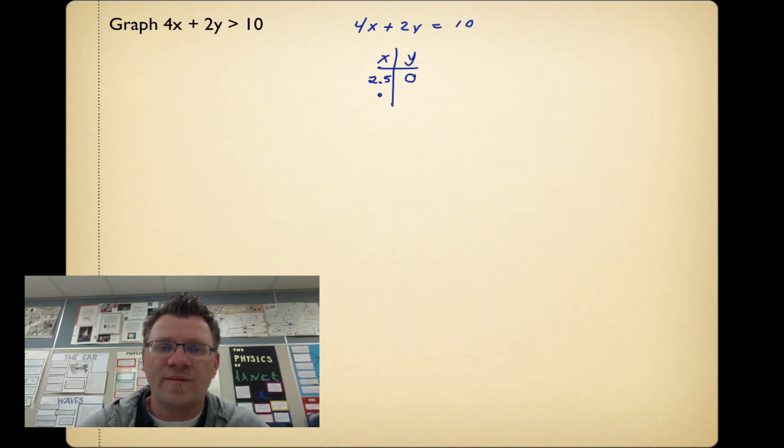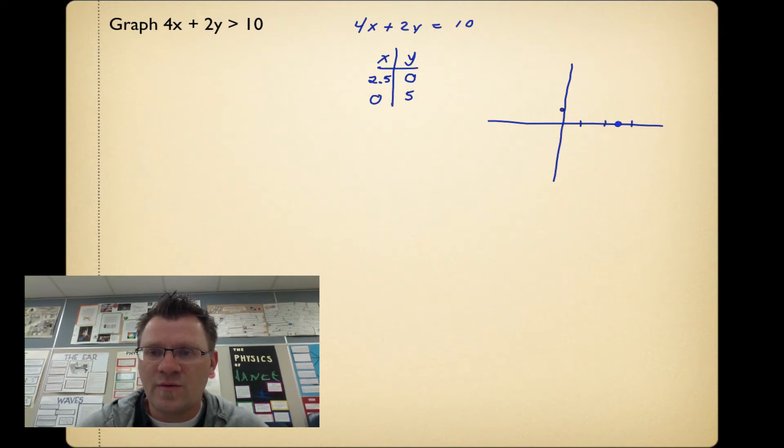If we find the y-intercept, that's when x equals 0. When x equals 0, that means y is going to be equal to 5. So now when we graph this thing, we have two points: 2.5 comma 0, and 0 comma 5. So somewhere up here, then we have a line.